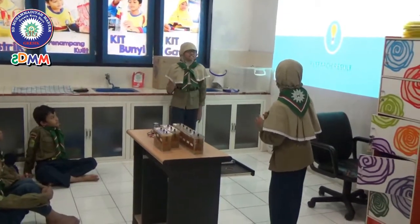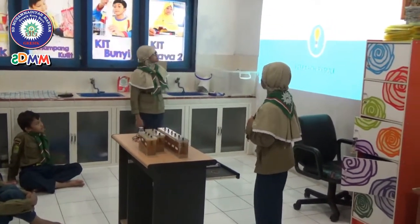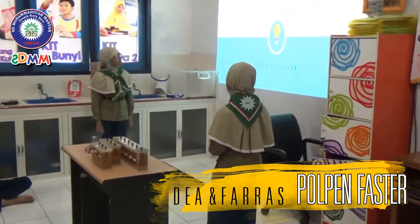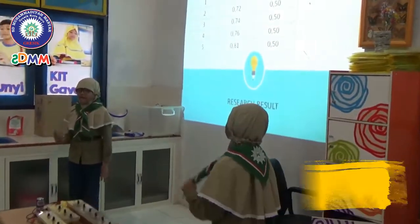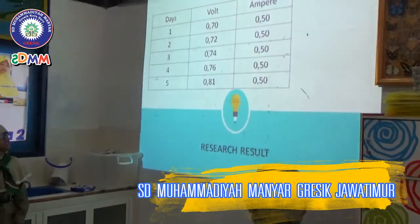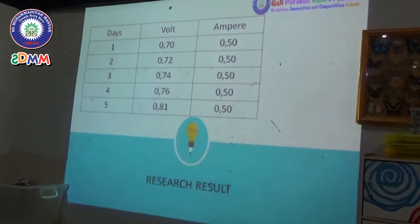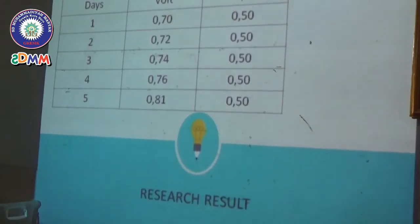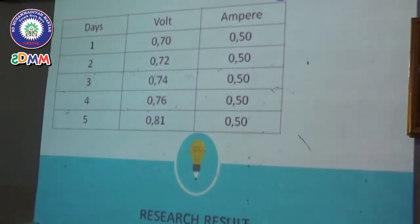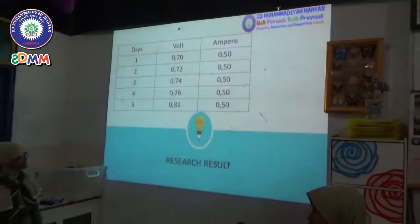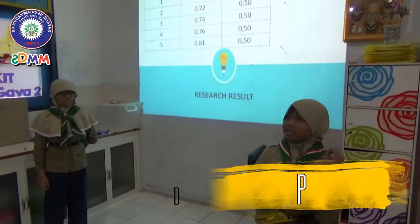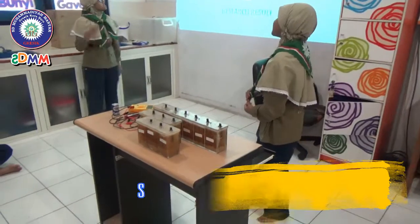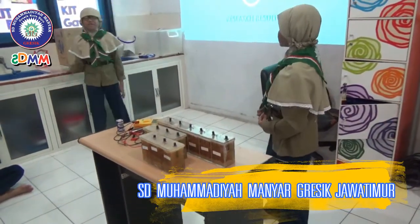The measurement results: Day one - 0.70V and 0.50A. Day two - 0.70V and 0.50A. Day three - 0.74V and 0.50A. Day four - 0.76V and 0.50A. Day five - 0.81V and 0.50A.